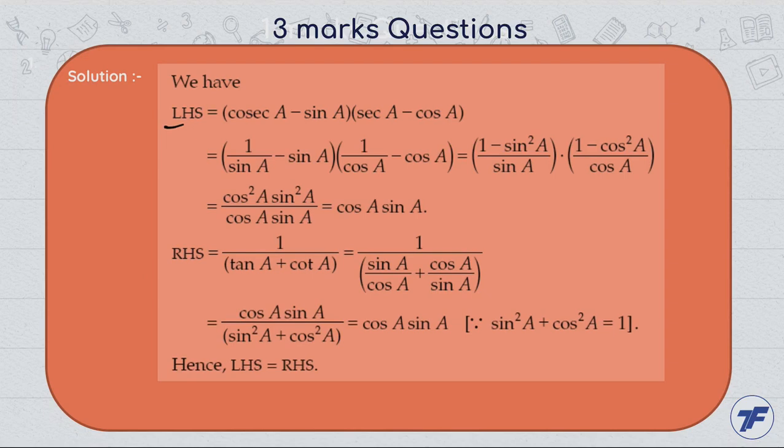Taking LHS from the solution: put the value of cosec in terms of sin A, which gives us one by sin A minus sin A, and similarly the value of sec becomes one by cos A minus cos A. Taking LCM: one minus sin square A upon sin A and one minus cos square A upon cos A.